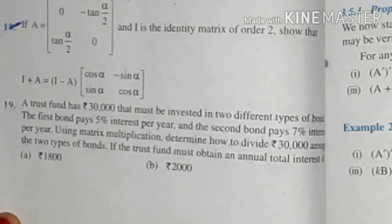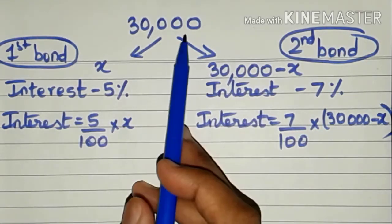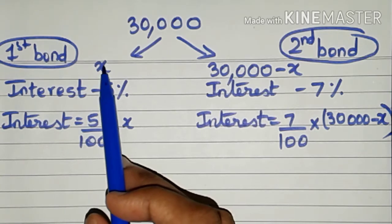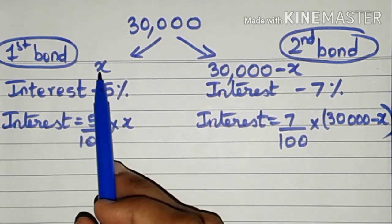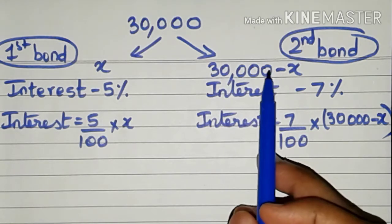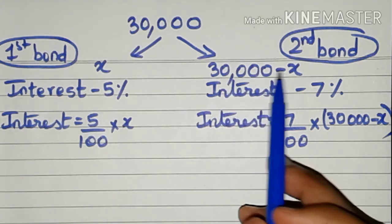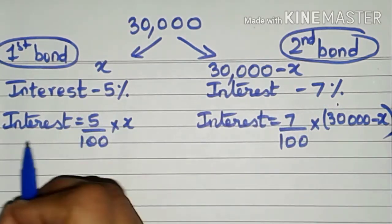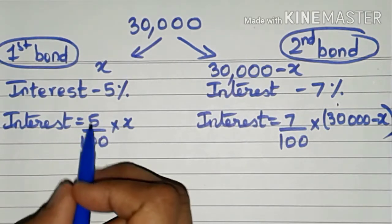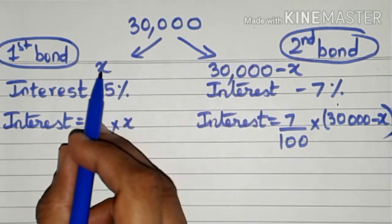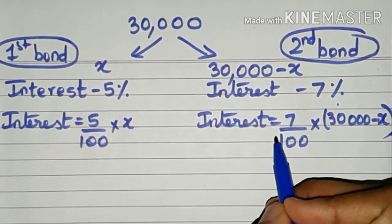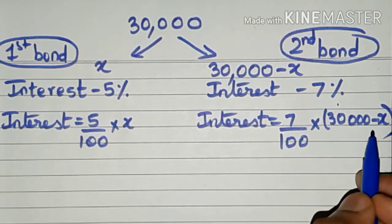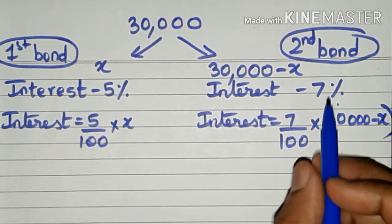We have to divide this 30,000 into two parts. Let it be divided such that the first bond receives x amount and the second bond receives 30,000 minus x. The interest here is 5% and the interest here is 7%. So the total interest per annum will be 5/100 times x plus 7/100 times (30,000 minus x).